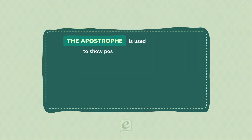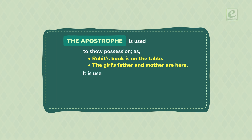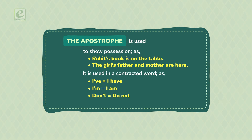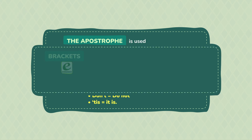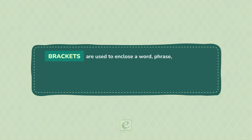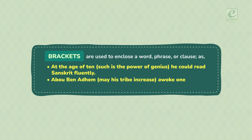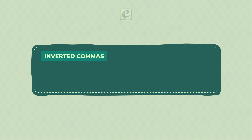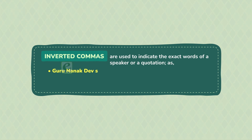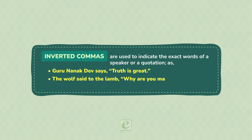The apostrophe is used to show possession, as: 'Rohit's book is on the table.' 'The girl's father and mother are here.' It is also used in a contracted word, as: I've = I have, I'm = I am, Don't = do not, 'Tis = it is. Brackets are used to enclose a word, phrase or clause, as: 'At the age of ten (such is the power of genius), he could read Sanskrit fluently.' Inverted commas are used to indicate the exact words of a speaker or a quotation, as: 'Guru Nanak Dev says: Truth is great.' 'The wolf said to the lamb: Why are you making the water muddy?'